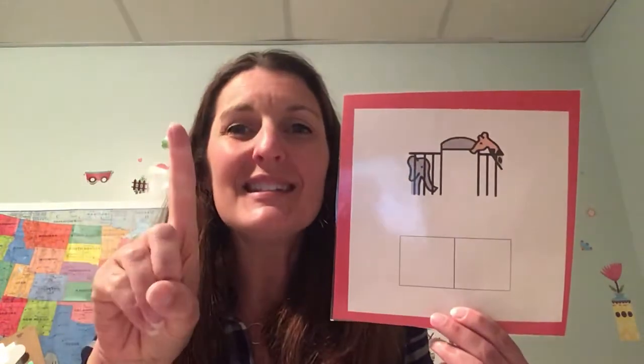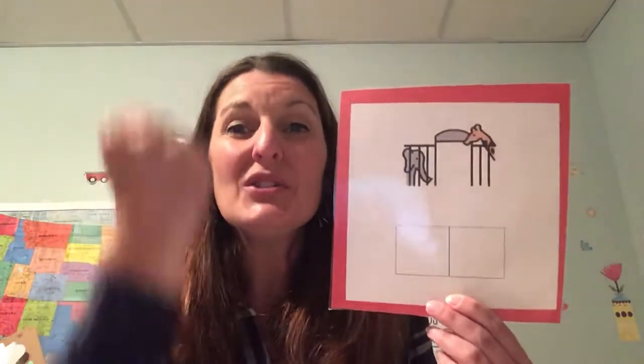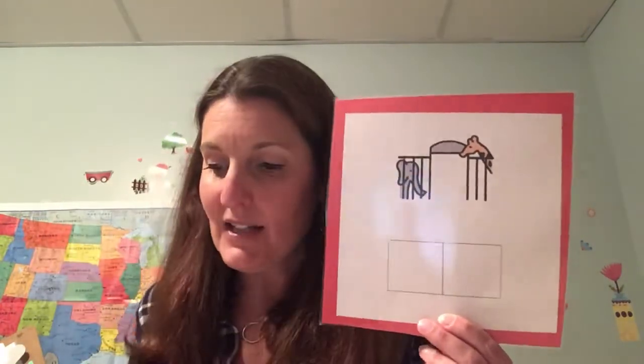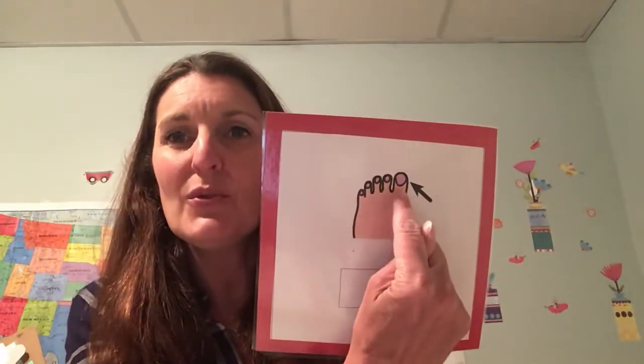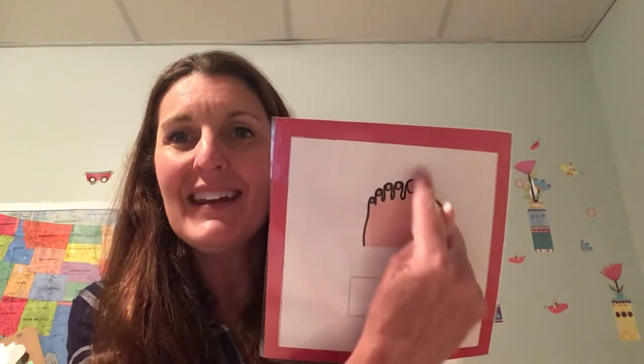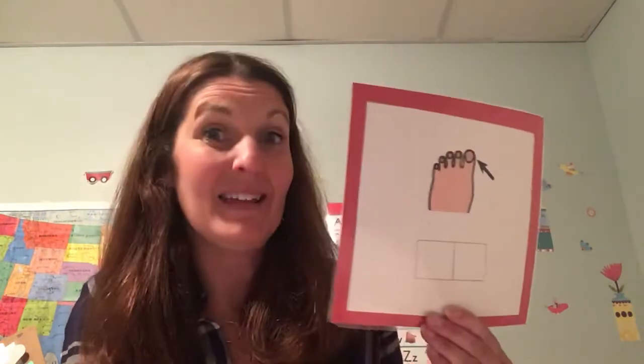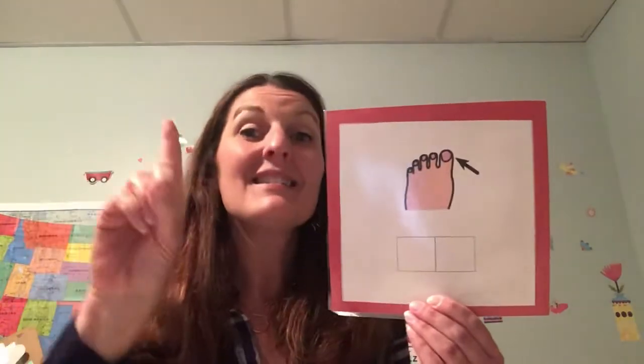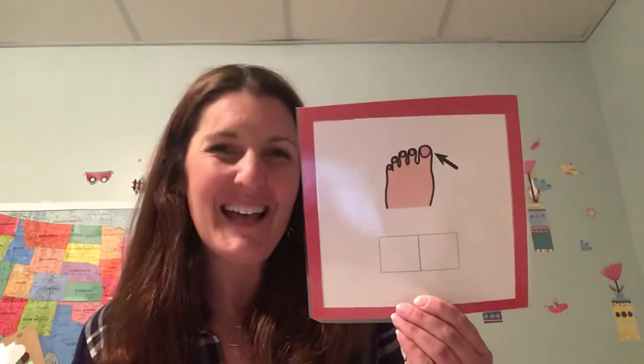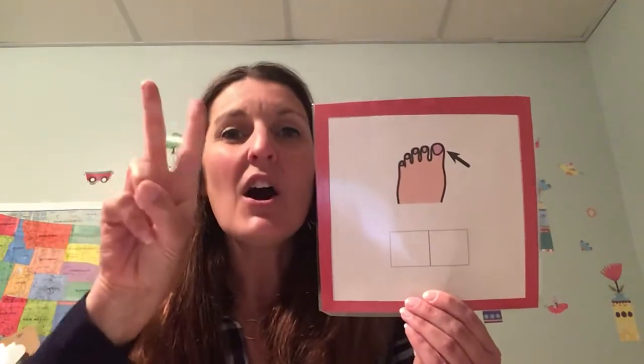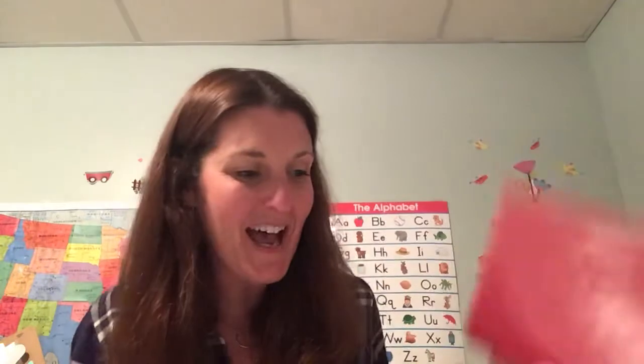One more time: Z, oo, zoo. Excellent. One more easy red one, and then we're going to go to three sounds. So this is pointing to this part of your body, your toe. Let's count and pull the sounds: T, oo, toe. One more time: T, oo, toe. Excellent job.